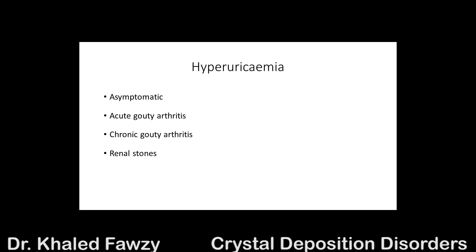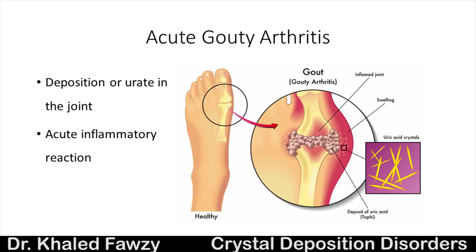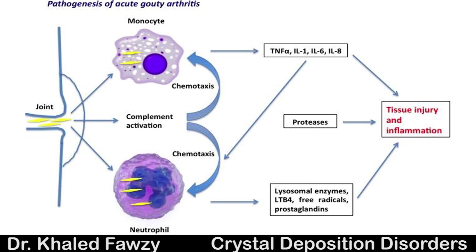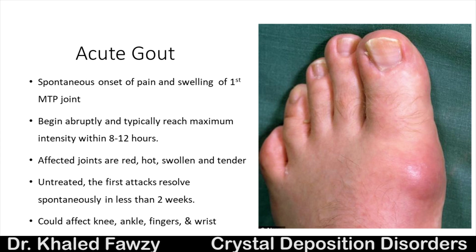Hyperuricemia could be asymptomatic, you can have an acute attack, chronic gouty arthritis, or kidney disease with renal stones. In an acute attack, urate crystals are deposited into the joint, leading to an acute inflammatory reaction. Crystals are engulfed by monocytes and neutrophils, and inflammatory mediators are released, causing tissue injury and inflammation. It usually affects the first metatarsophalangeal joint, begins abruptly, and reaches a maximum within 8 to 12 hours. The affected joints are red, hot, swollen, and tender.